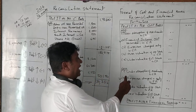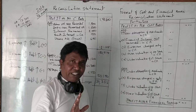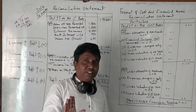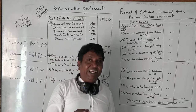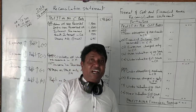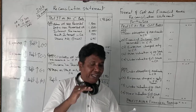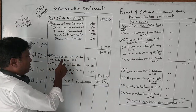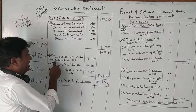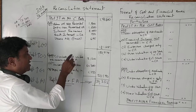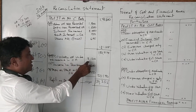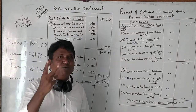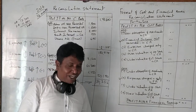The first item: works overhead — under absorbed or over absorbed. Under absorbed means less than what was charged, over absorbed means more. Works overhead over-recovered in cost accounting, under-recovered in cost accounting: 3,120. This needs to be adjusted.